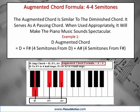Augmented Chord Formula: four four semitones. The augmented chord is similar to the diminished chord — it serves as a passing chord. When used appropriately, it will make the piano music sound spectacular. D augmented chord equals D plus F sharp, four semitones from D, plus A sharp, four semitones from F sharp.